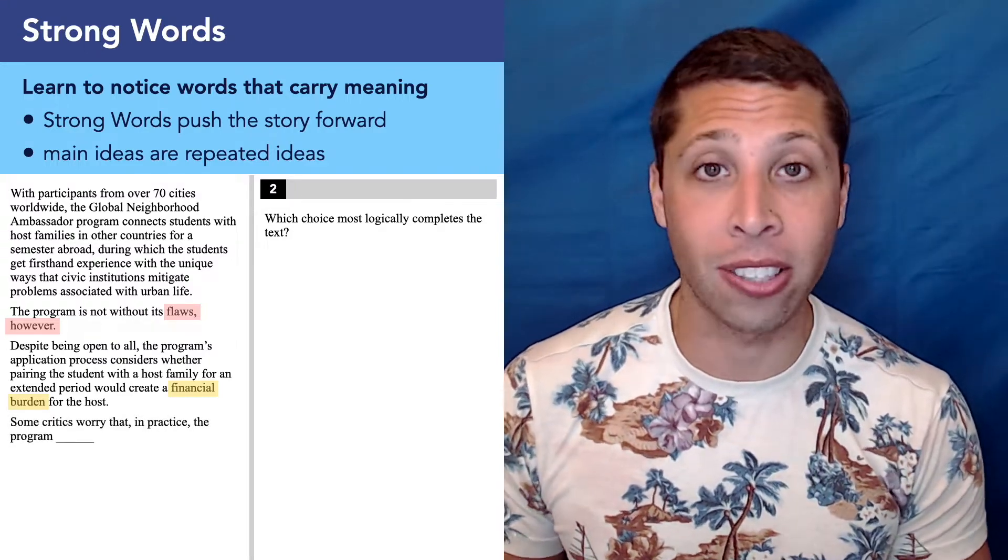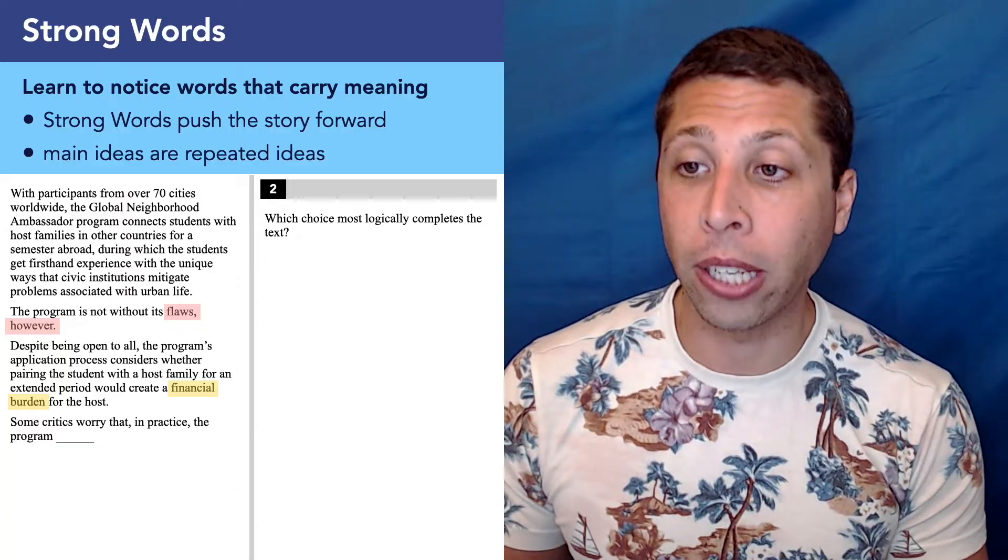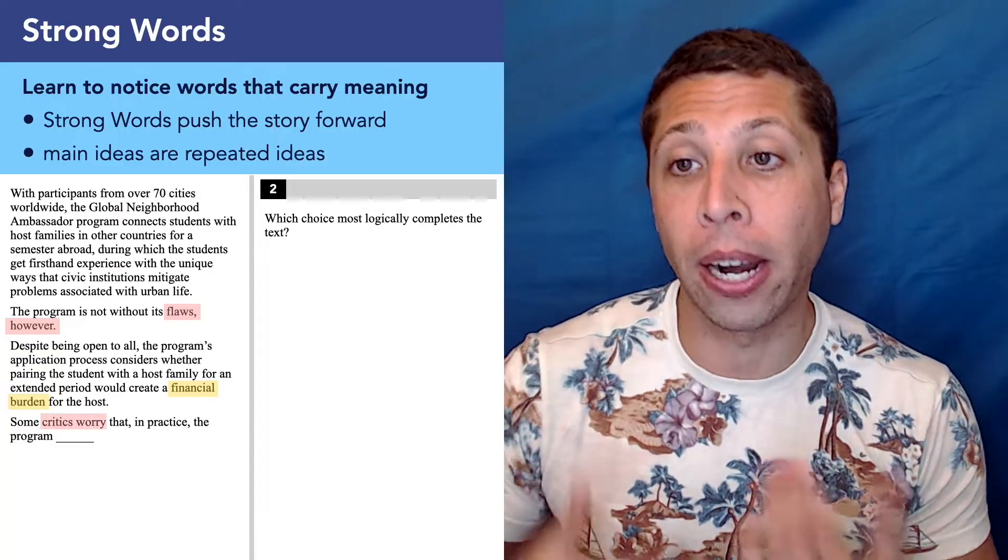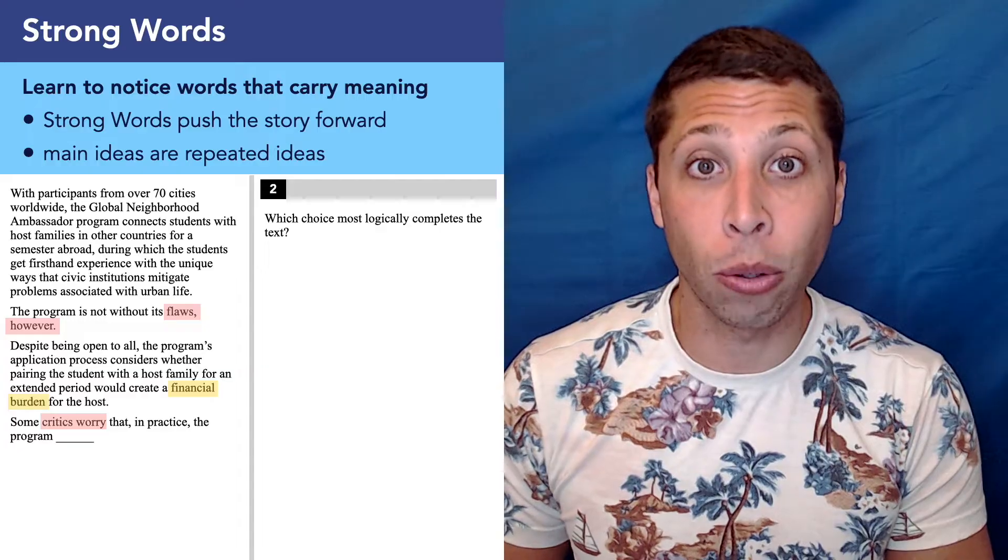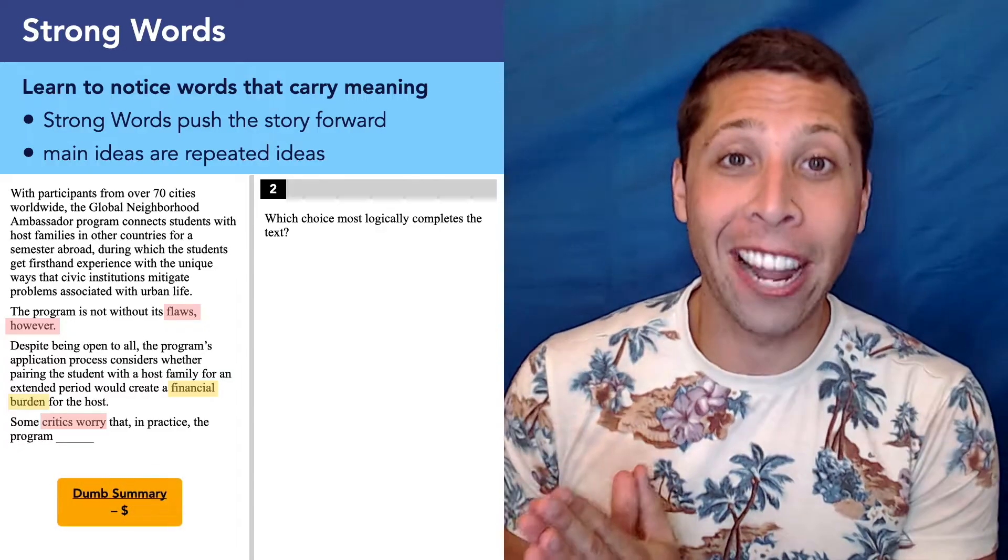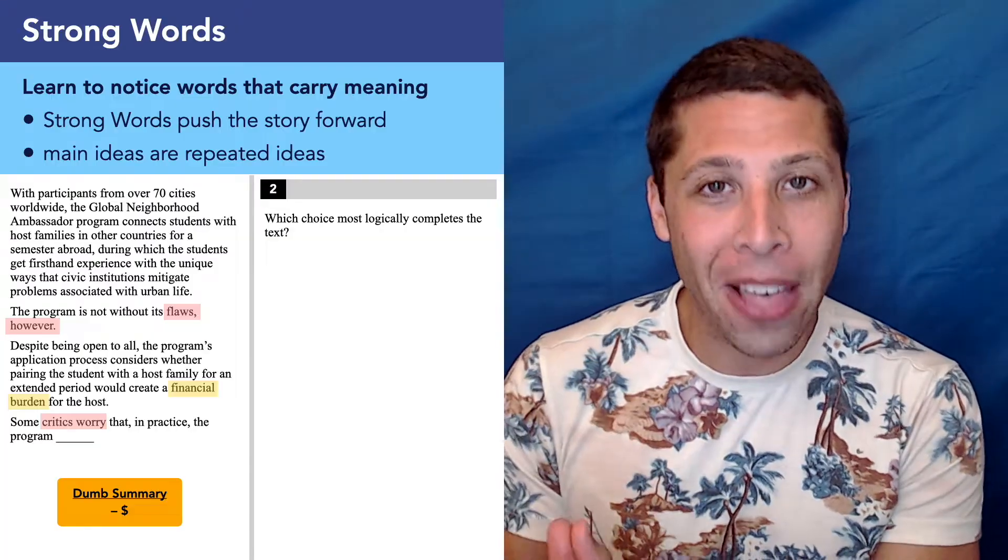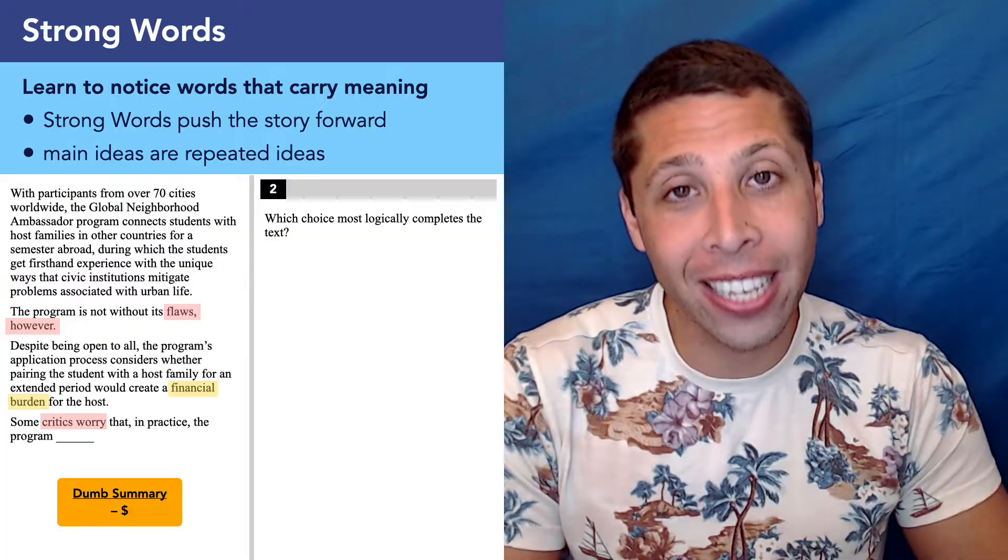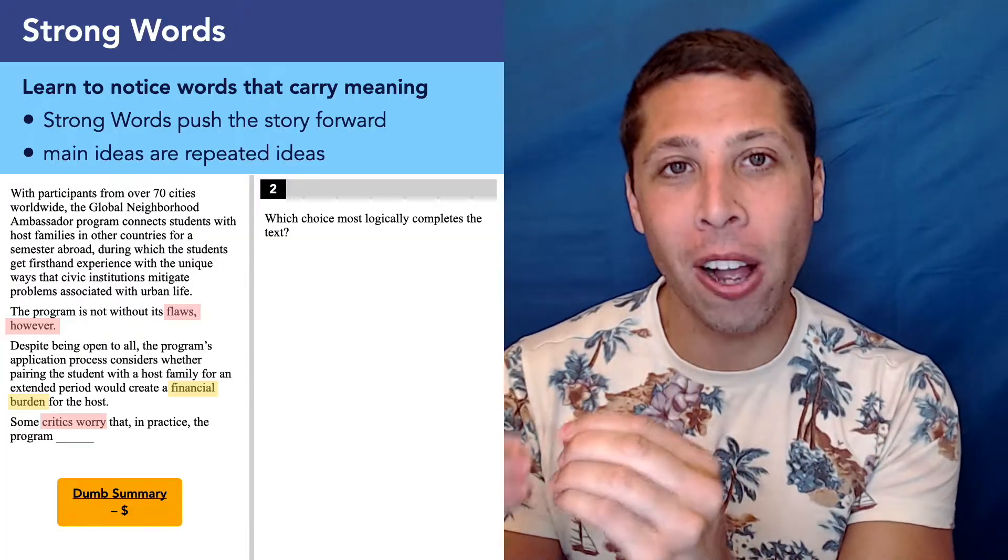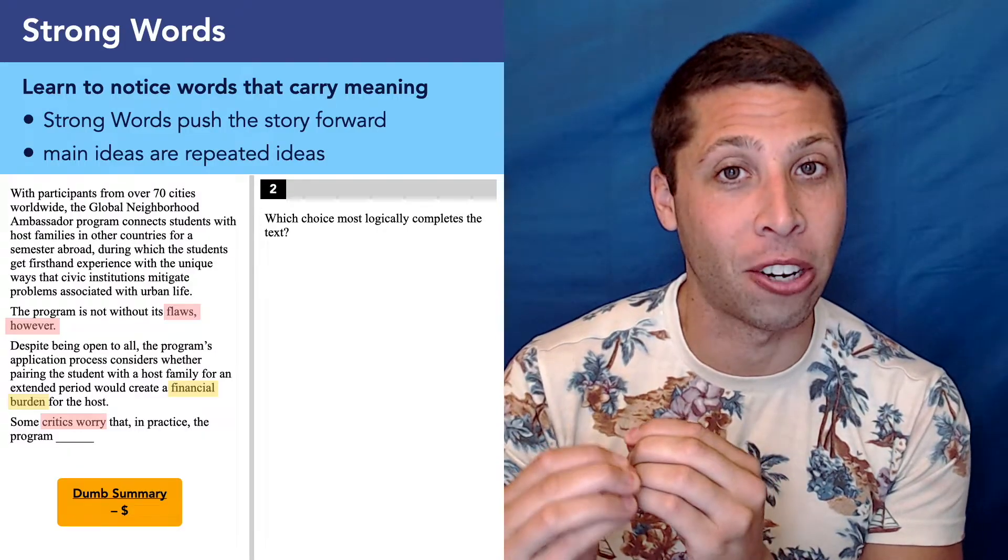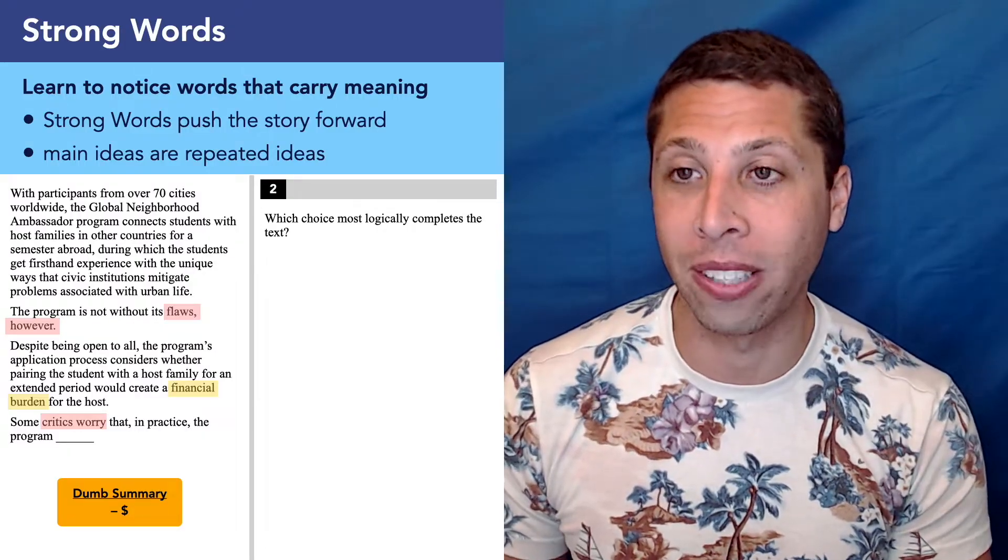And we're about to do that because the end just kind of reiterates that it's negative. Some critics worry that in practice, the program, blah, blah, blah. So let's look at the choices. And our dumb summary, we definitely need something negative, but on top of that, we need something with finances, with money. That was the strong idea that didn't have a connotation necessarily that we need to make sure appears in our choices.